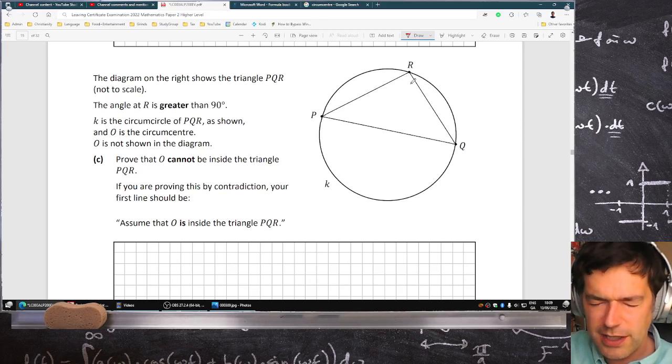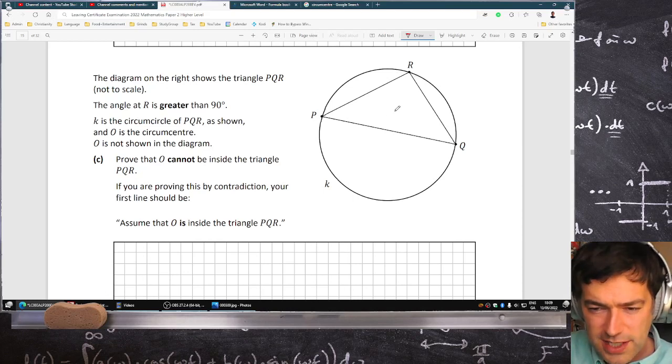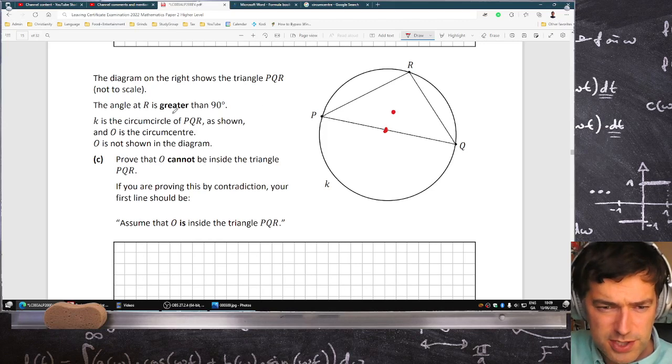So it's a proof that says that if the angle here is acute, the circumcentre is inside it. If it's a right angle, the circumcentre is on PQ. And if it's obtuse, which is what we have here, then the circumcentre is outside it.